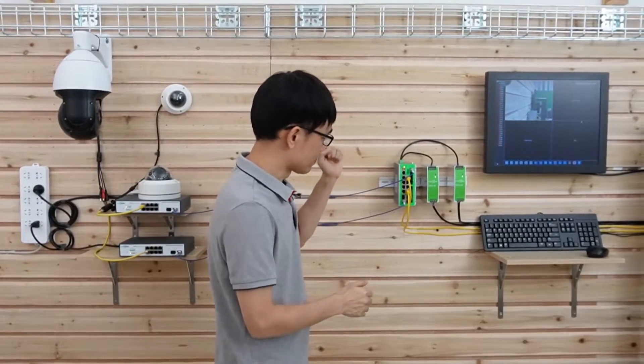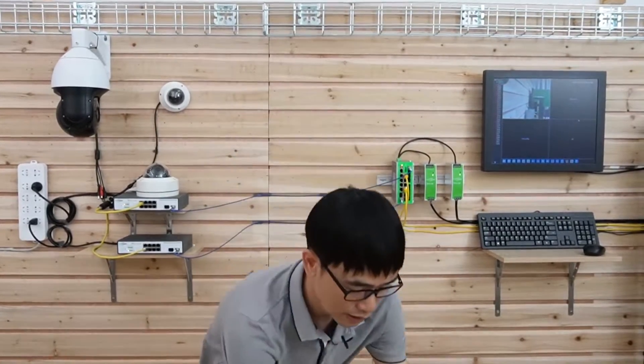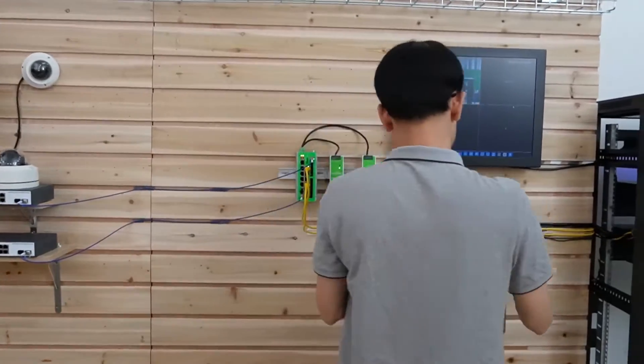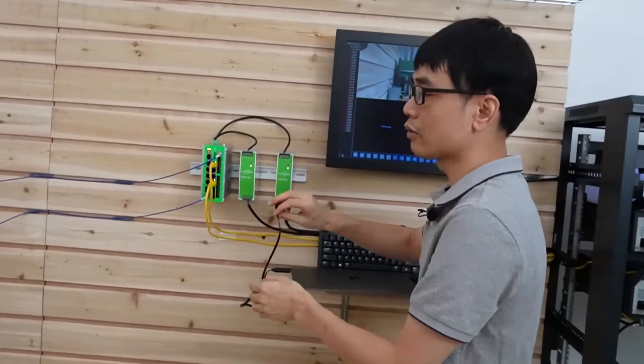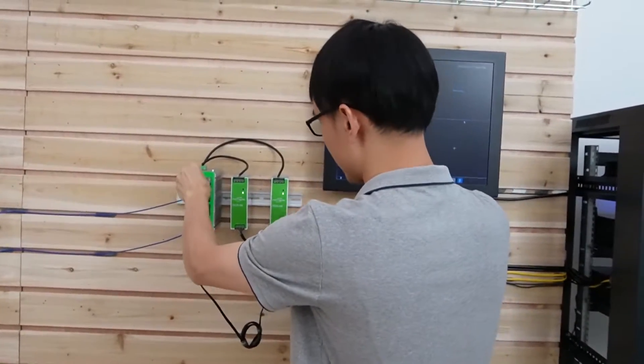Alright, now let me just put up the PC and connect to this core switch. I'll make a quick demonstration how to configure the VLAN. It's quite simple actually.